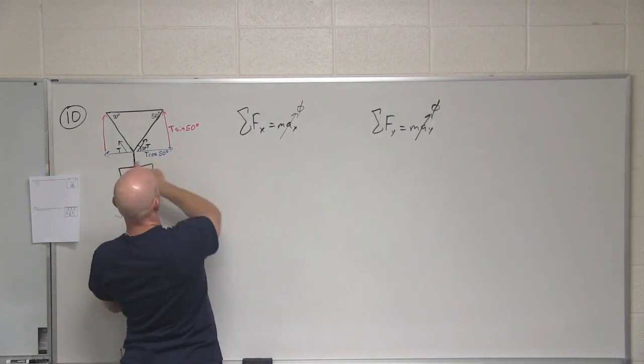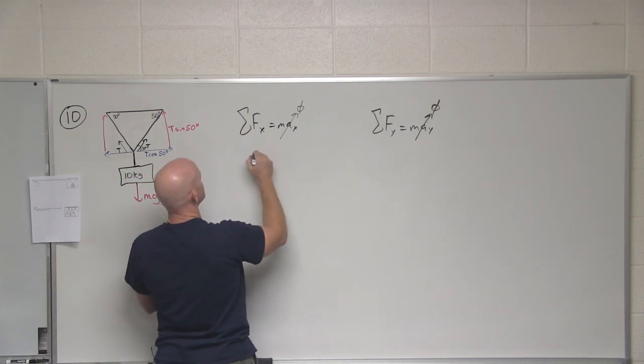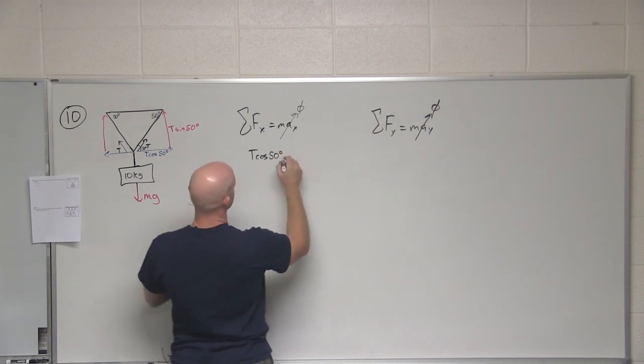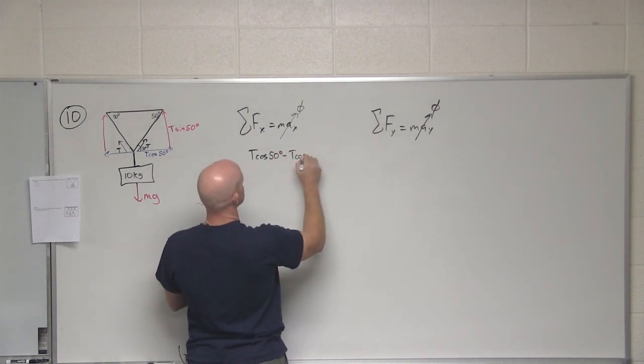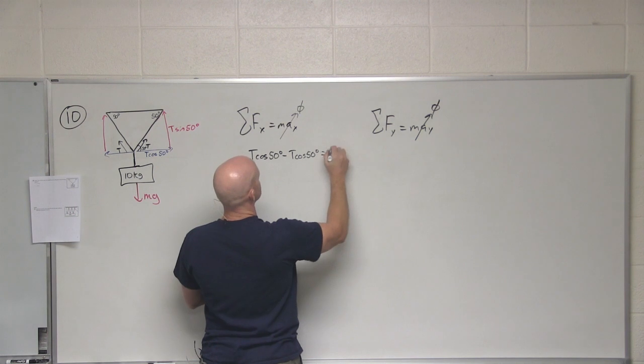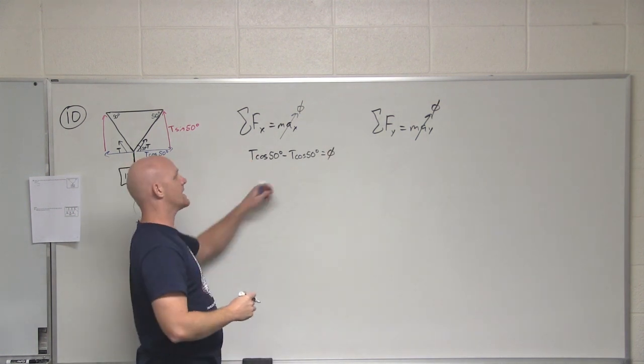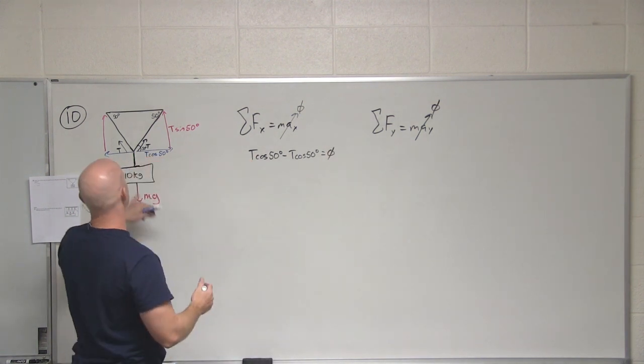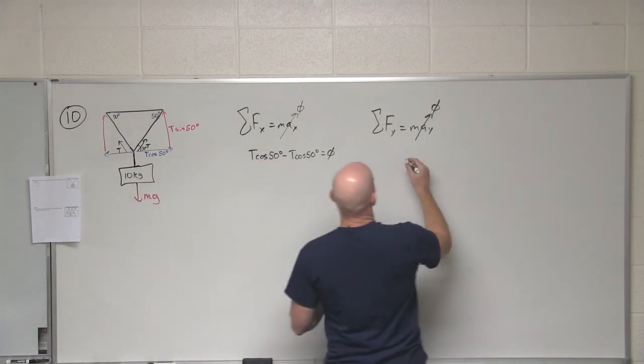Cool, let's set up our equations here. In the x direction, only forces we've got are both components. We have t cosine 50 degrees in one direction and in the opposite direction we also have t cosine of 50 degrees, and this adds up to zero. And well, indeed it does. It's not super helpful though; we can't solve for tension here at all.